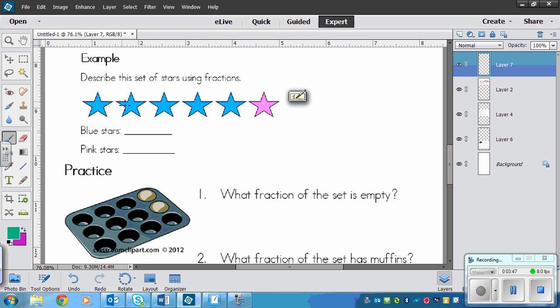So let's try this example then. It says describe this set of stars using fractions. So we have some stars here and we need to describe the blue stars using a fraction and then describe the pink stars using a fraction.